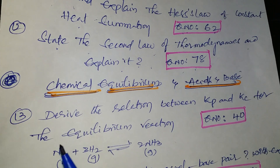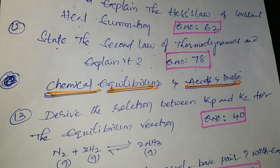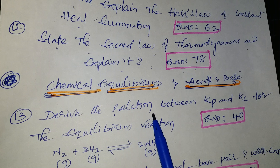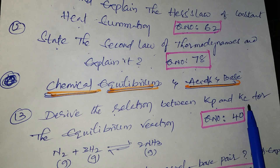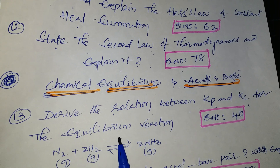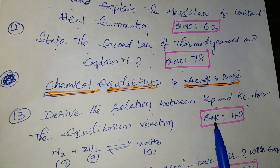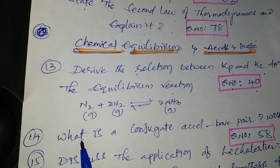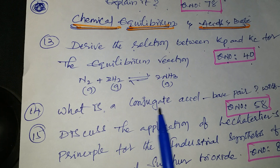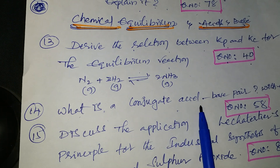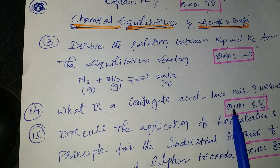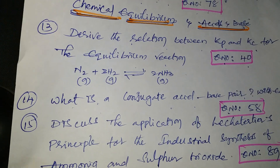Next lesson: chemical equilibrium and acids and bases. First: derive the relation between Kp and Kc for the equilibrium reaction — question number 40 from the Telugu academic textbook. Next: what is a conjugate acid-base pair? Give a suitable example — question number 58.